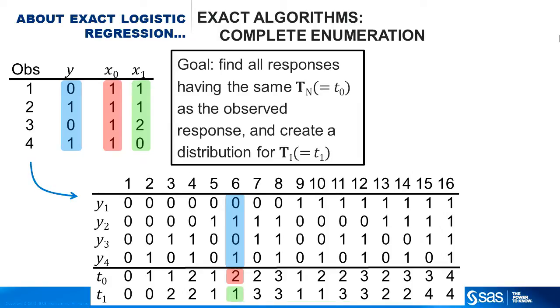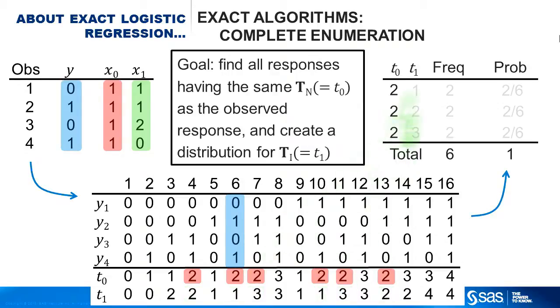To condition out the intercept x naught, note that its observed sufficient statistic is 2, so find all the other y vectors that give t naught equal to 2 and accumulate all their t sub 1 values, and that's your exact distribution. Now that you have these values, the conditional likelihood is computable, and later you'll see how to derive tests and parameter estimates.